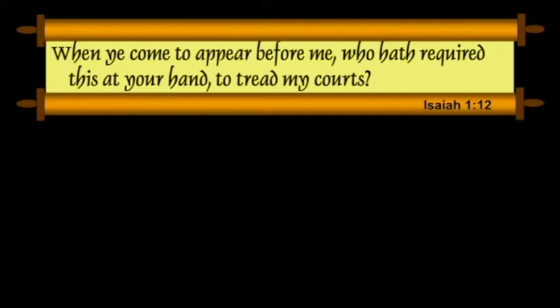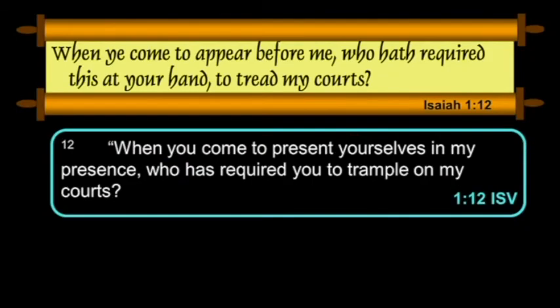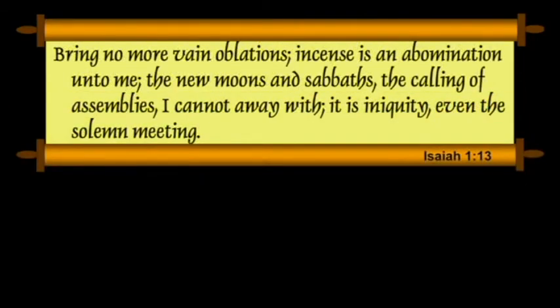Verse 12: "When ye come to appear before me, who hath required this at your hand to tread my courts?" The ISV: "When you come to present yourselves in my presence, who has required you to trample on my courts?" And verse 13: "Bring no more vain oblations. Incense is an abomination unto me. The new moons and Sabbaths, the calling of assemblies — I cannot away with. It is iniquity, even the solemn meeting." The ISV: "Stop bringing useless offerings. Your incense is detestable to me, as are your new moons, Sabbaths, and calling of convocations. I cannot stand iniquity within a solemn assembly."